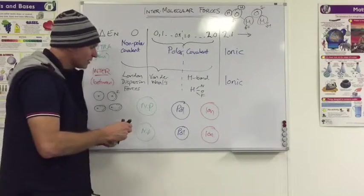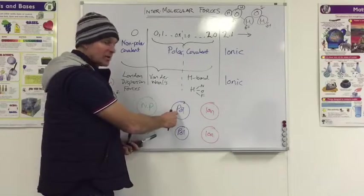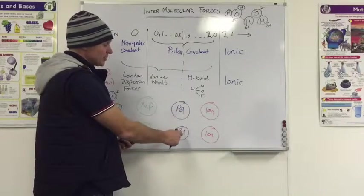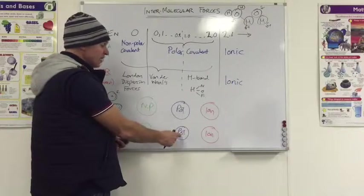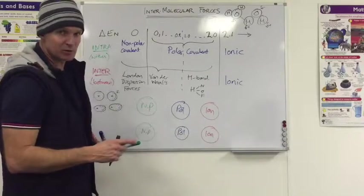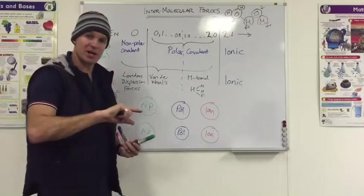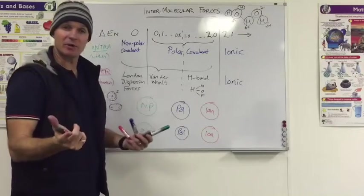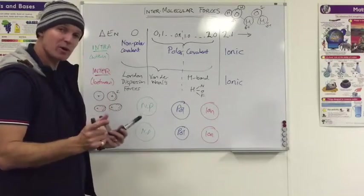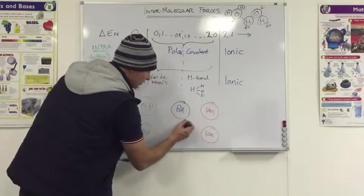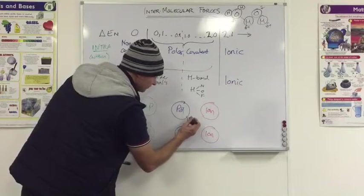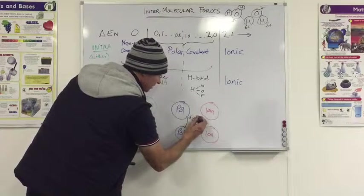Now, when a polar substance, like water, is attracted to another polar substance, both of them are dipoles. A dipole being something that's got a plus side and a minus side, in other words, a polar molecule. So because they're both polar, they're both dipoles, the bond that forms between them is simply a dipole-dipole.